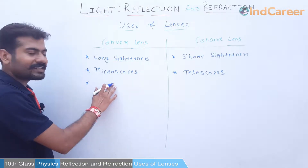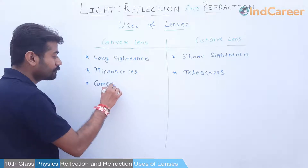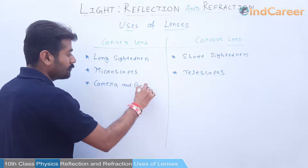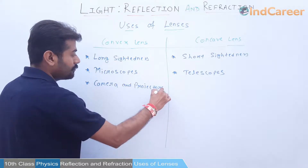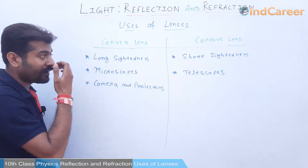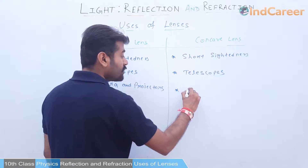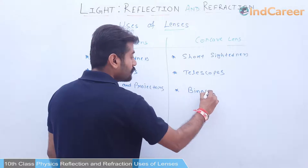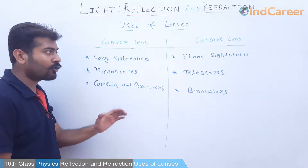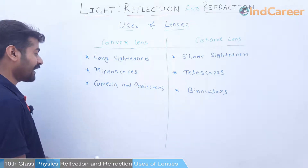The third application: convex lenses are used in projectors and cameras. Projector lenses and camera lenses consist of convex lenses. On the other hand, concave lenses are used in binoculars. So binoculars generally have concave lenses.